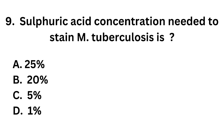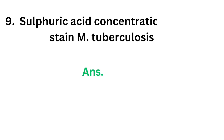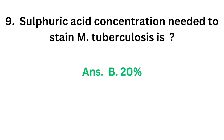Question number 9. Sulfuric acid concentration needed to stain Mycobacterium tuberculosis is: Option A: 25%. Option B: 20%. Option C: 5%. Option D: 1%. The correct answer is option B, 20%. 20% sulfuric acid concentration is needed to stain Mycobacterium tuberculosis.